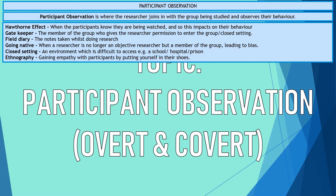A field diary contains the notes taken while conducting research. Going native is a potential problem where the researcher loses their objectivity, becomes too involved in the group, and develops too much of an attachment — this can lead to bias. Closed settings are environments like schools, hospitals, and prisons that are difficult to access. Ethnography refers to the rich data produced — lots of insight, understanding, and data on the lives, experiences, and feelings of individuals, gained by living and participating in them.